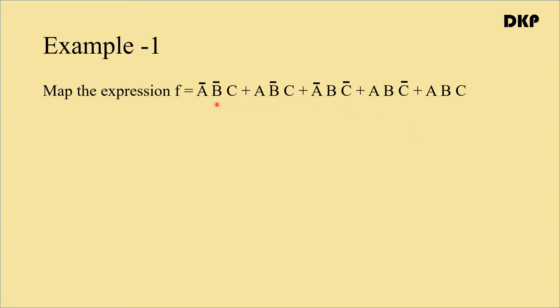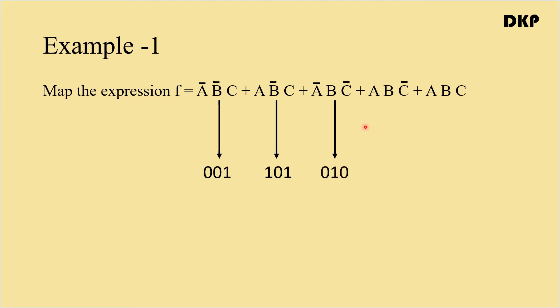There are five terms. We have to convert each term to its corresponding min term. For SOP, the variable with a bar is written as 0 and the variable without a bar is written as 1. So A bar B bar C gives 0, 0, 1; A B bar C gives 1, 0, 1; A bar B C bar gives 0, 1, 0; A B C bar gives 1, 1, 0; and A B C gives 1, 1, 1.